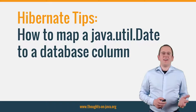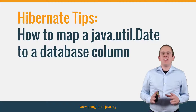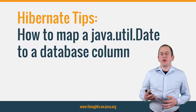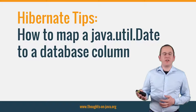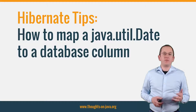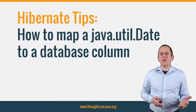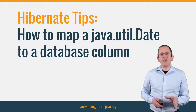Hi, I'm Torben Janssen from thoughts on java.org with a new Hibernate tip. JPA and Hibernate offer a standard mapping for Java util-date that stores it as a timestamp with nanoseconds. That's OK as a default, but it doesn't fit all use cases. In this video, I want to show you how you can easily customize this mapping.